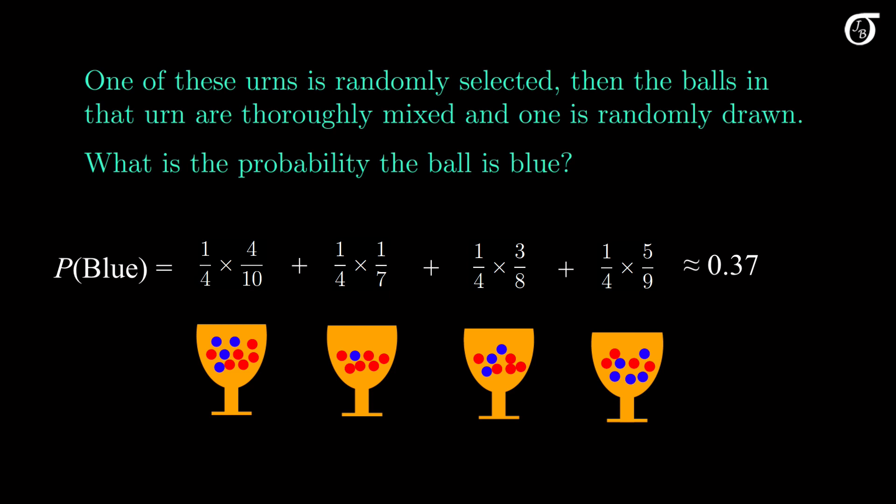A question for you: if instead we put all the balls in one urn, mixed them up, and drew one ball at random, would the probability of getting a blue ball be the same? I'll let you think about that. The law of total probability does have many practical applications, and it plays a big role in Bayes' theorem, which is a very important probability topic that we'll talk about another time.